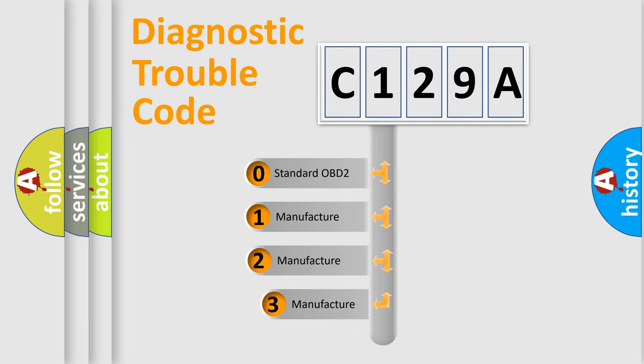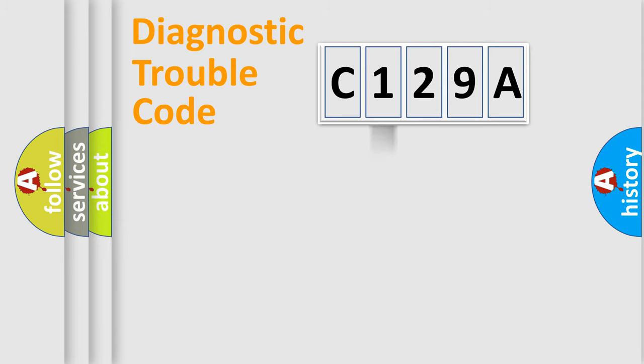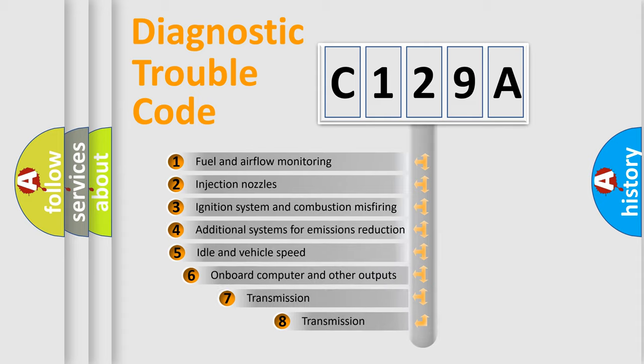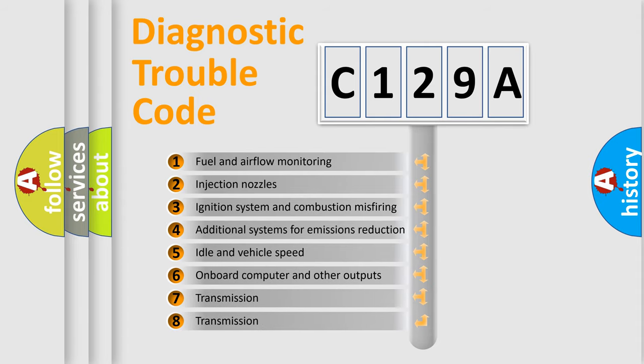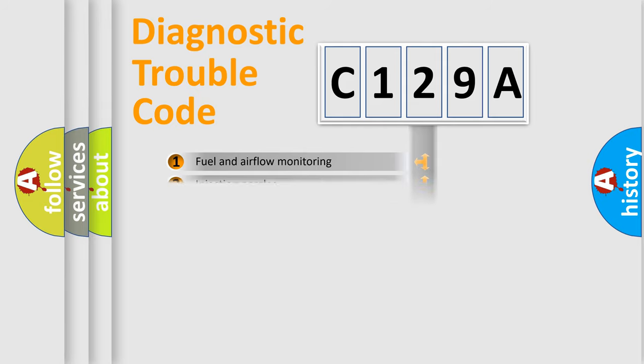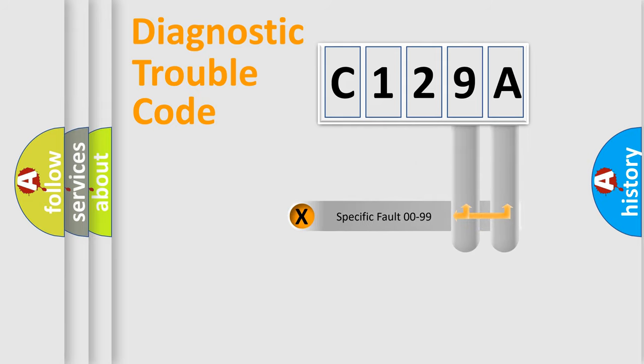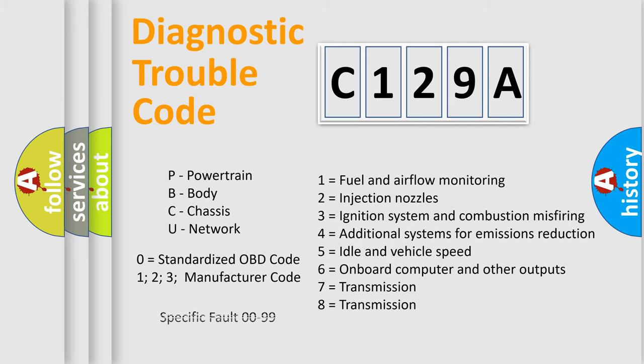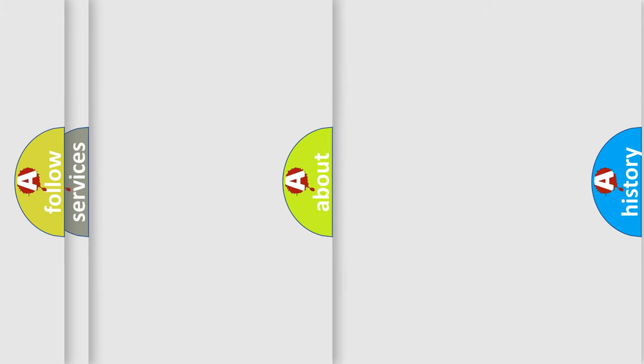If the second character is expressed as zero, it is a standardized error. In the case of numbers 1, 2, or 3, it is a more specific expression of the car-specific error. The third character specifies a subset of errors. The distribution shown is valid only for the standardized DTC code. Only the last two characters define the specific fault of the group. Let's not forget that such a division is valid only if the second character code is expressed by the number zero.